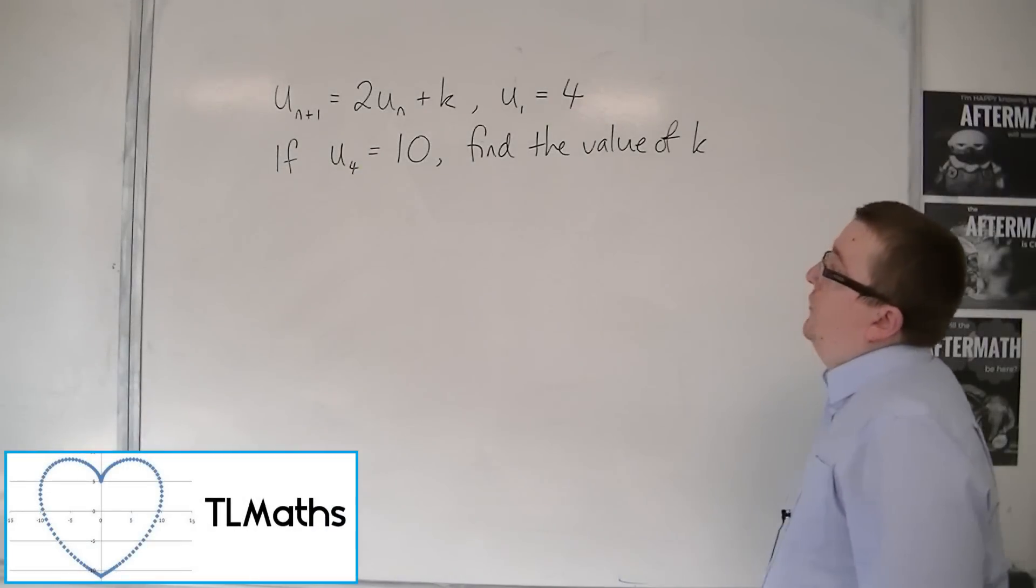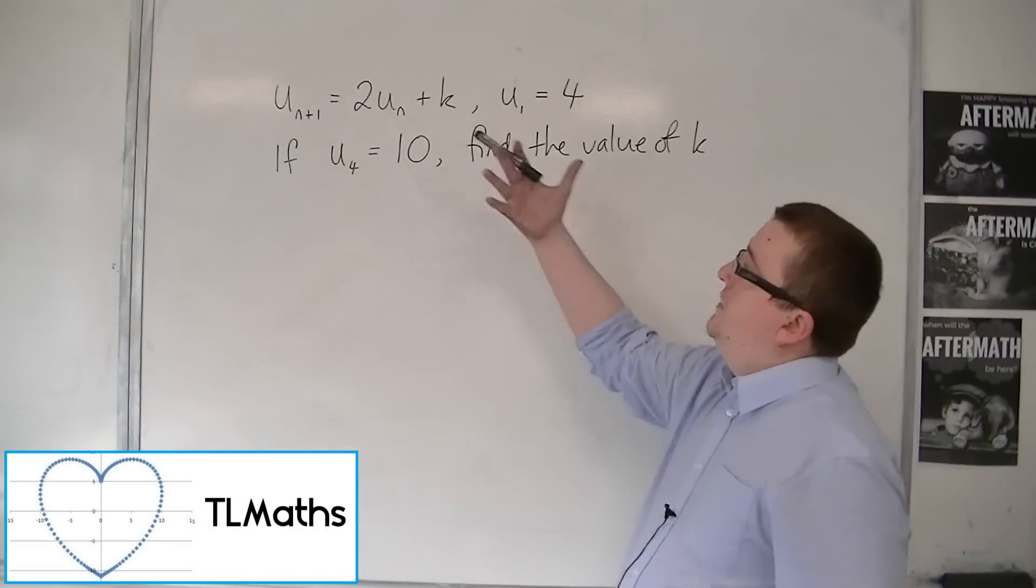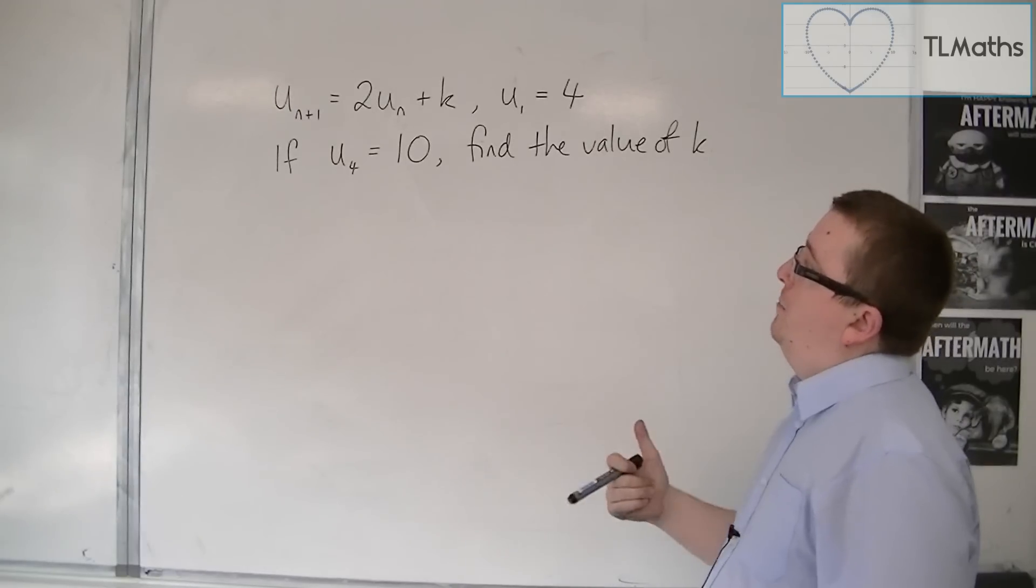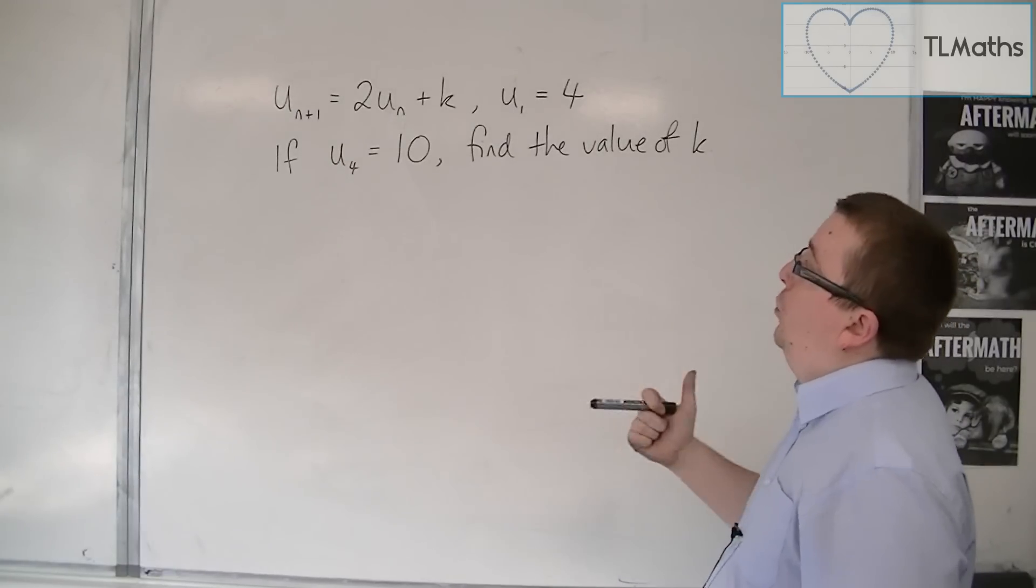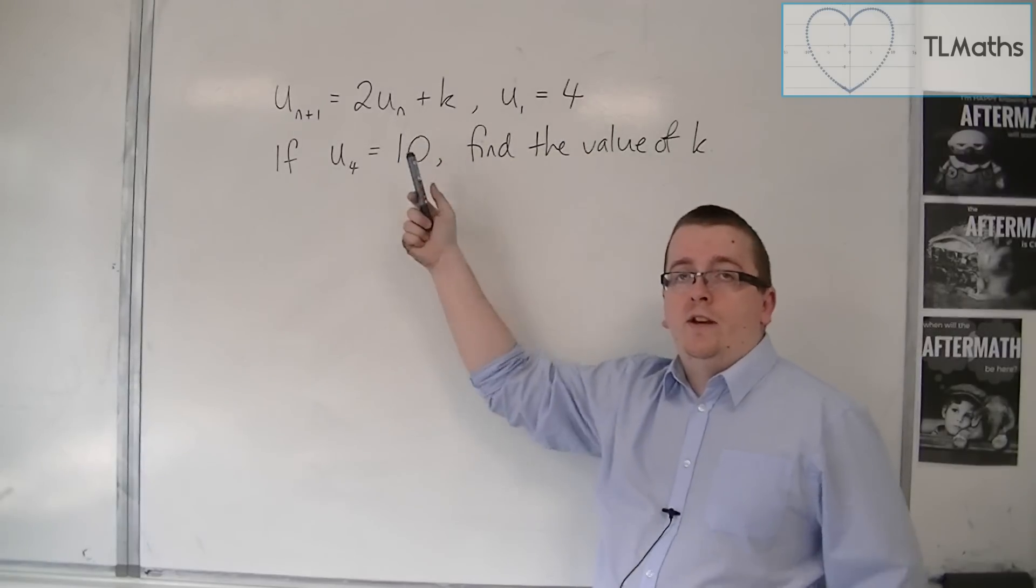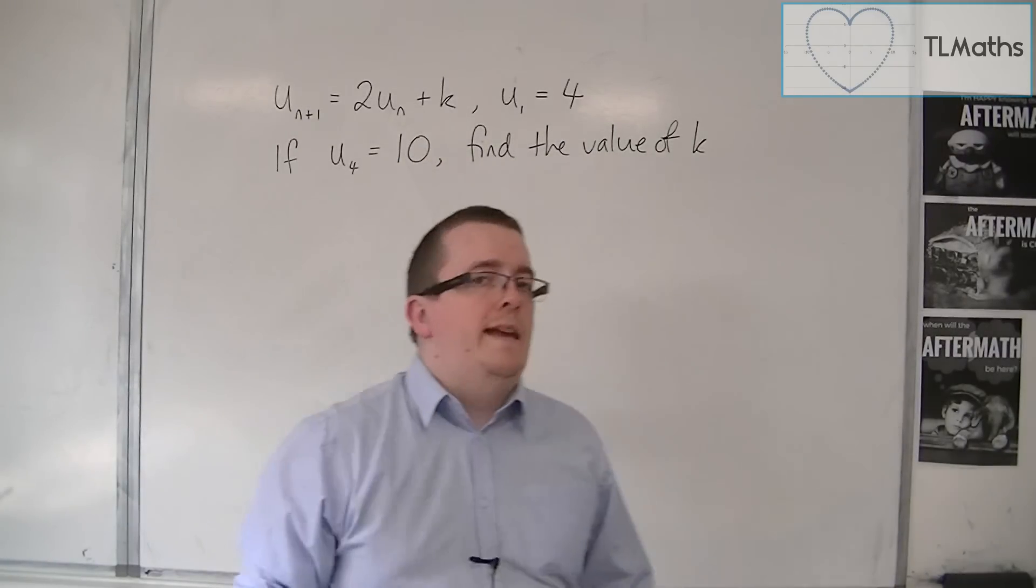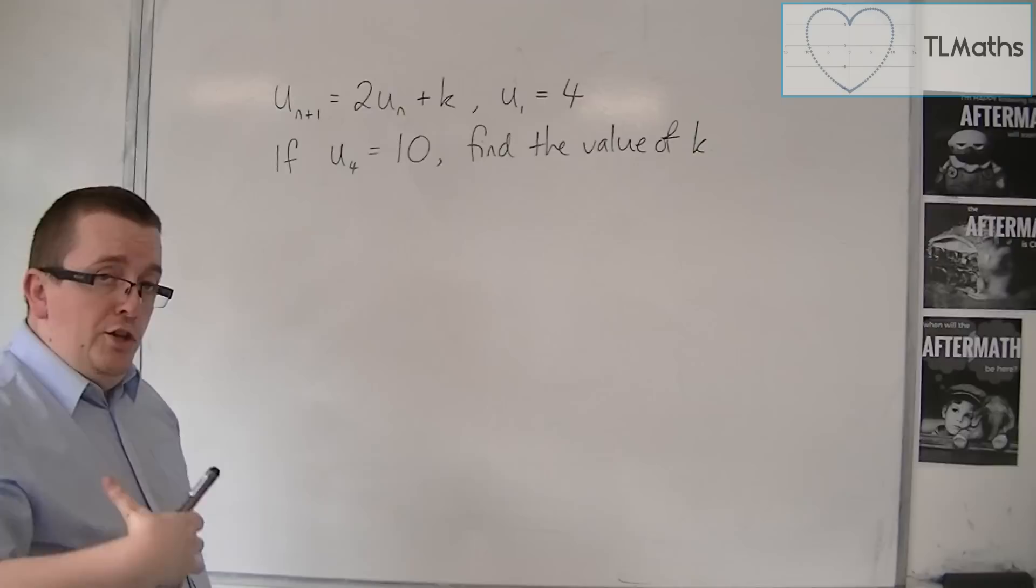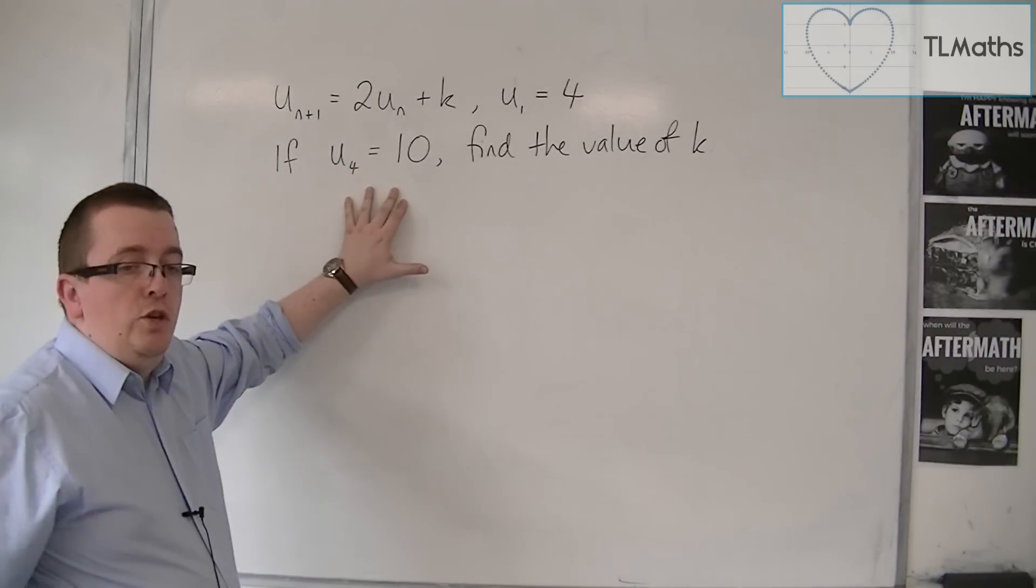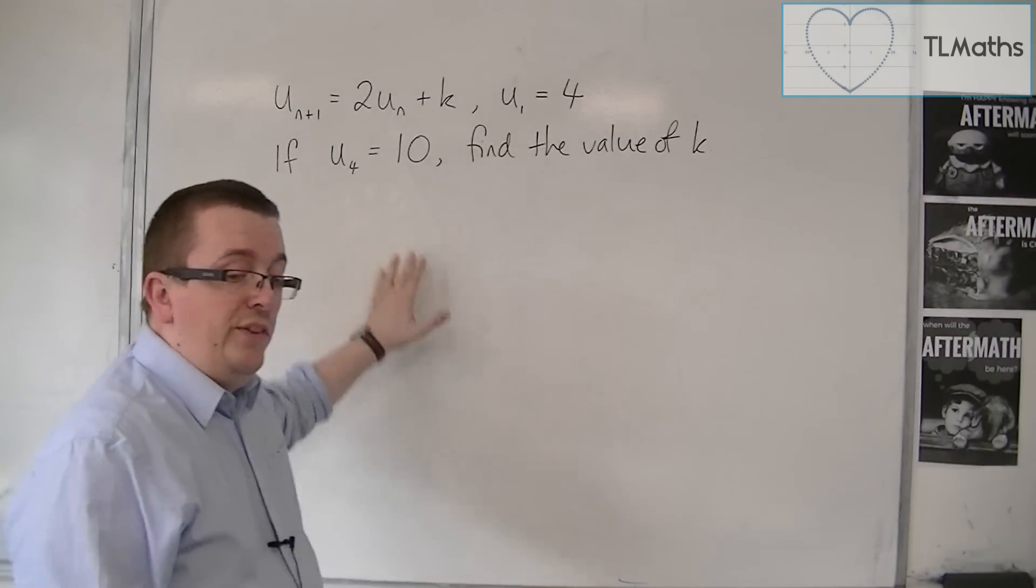So let's say that I'm told an inductive definition, un+1 is equal to 2un plus k, and u1 is equal to 4. So I'm told the starting term, I'm told the recurrence relation. The thing is, I don't know what k is. And my job is to find k, given that I've been given an extra bit of information, that u4 is equal to 10.